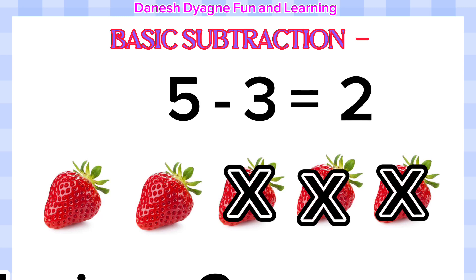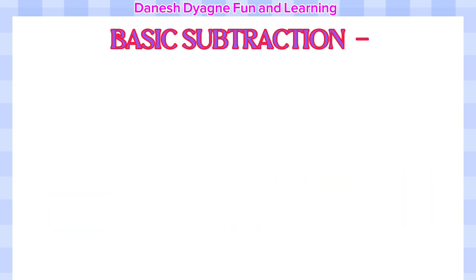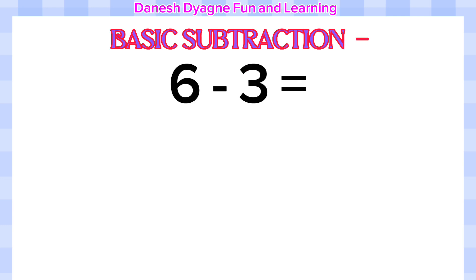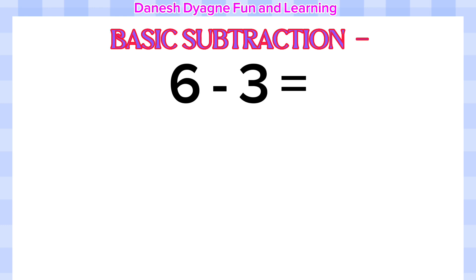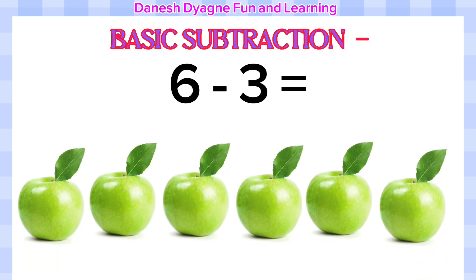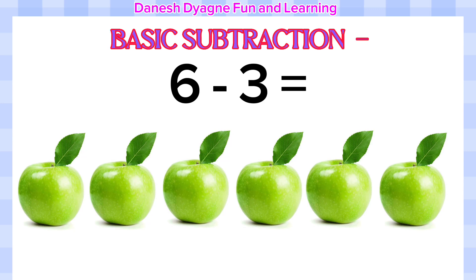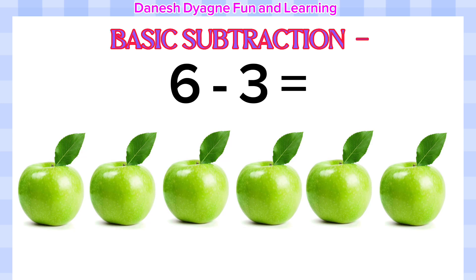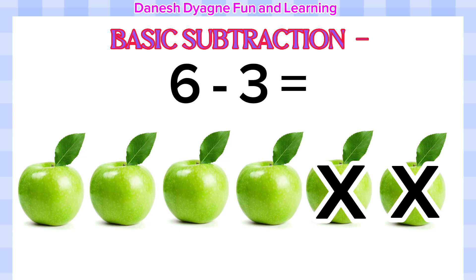Five minus three equals two. Let's have another example: six minus three. Again, we will use six objects to be able to subtract the number quickly. Let's count the apples: one, two, three, four, five, six. Now let's remove three apples by putting an X: one, two, three.